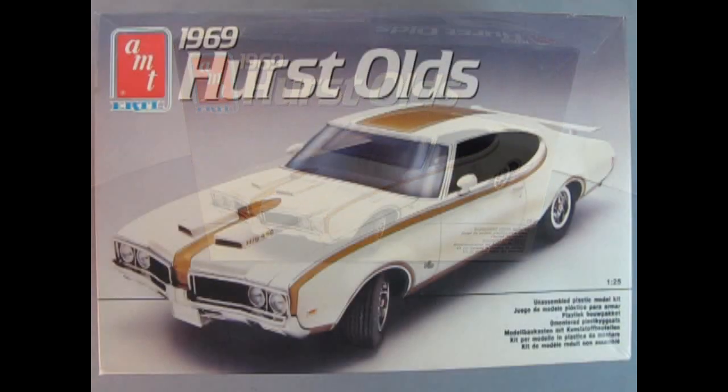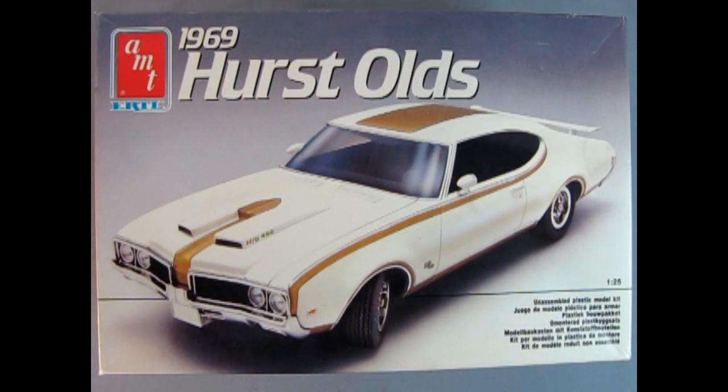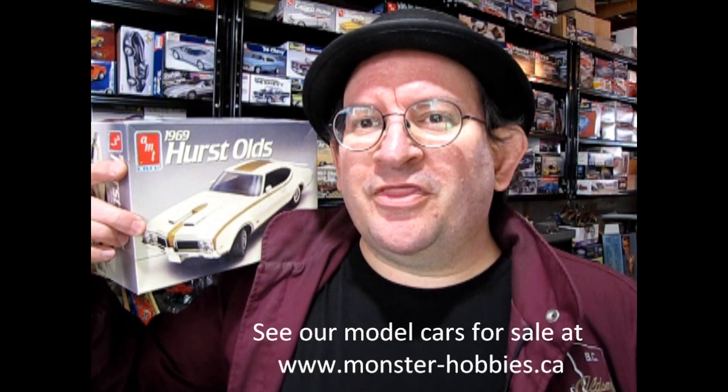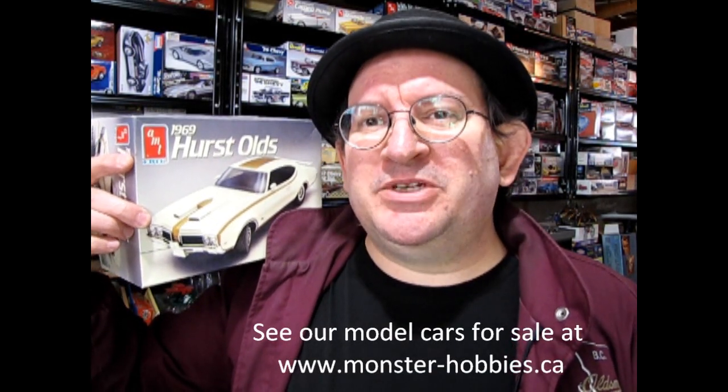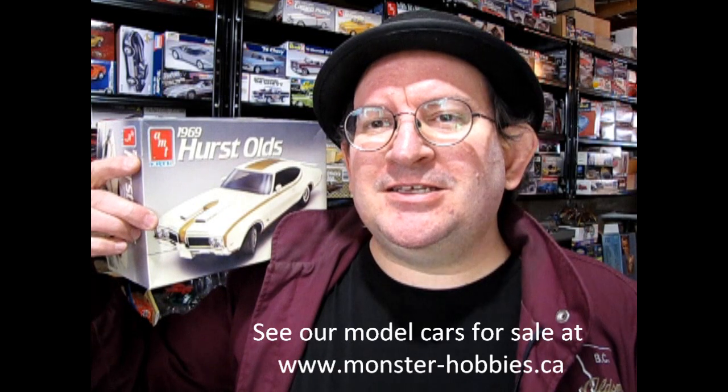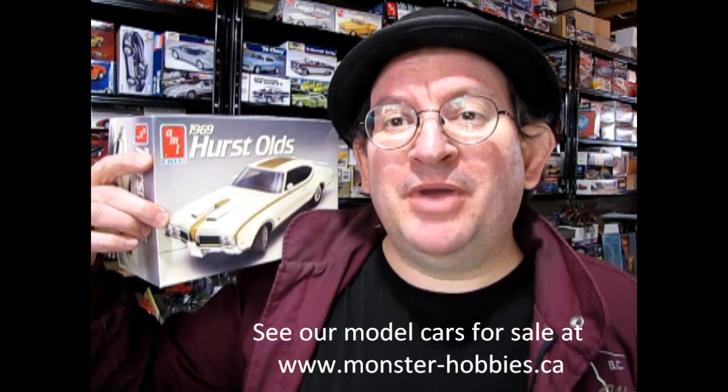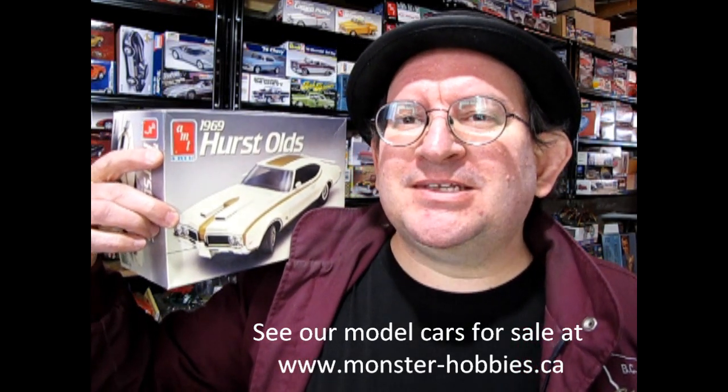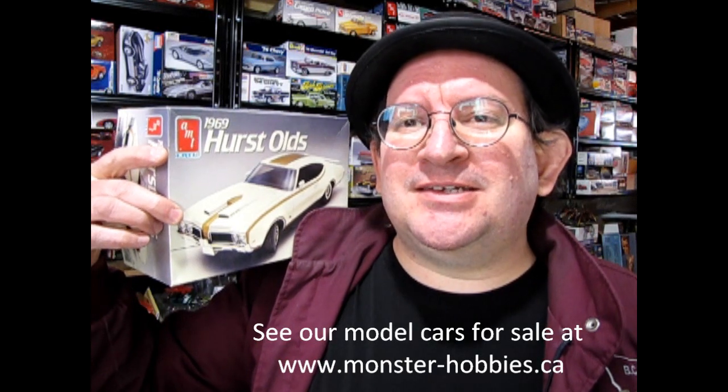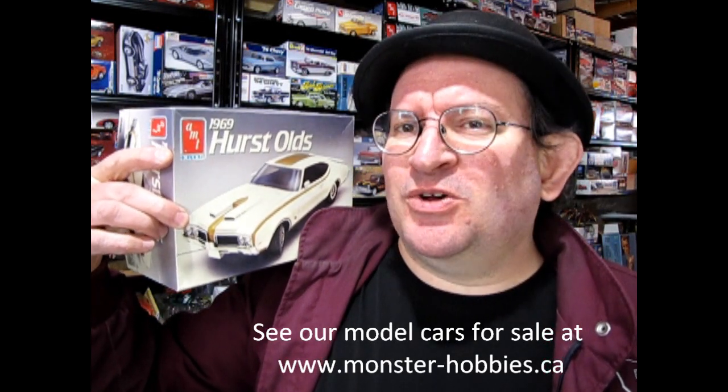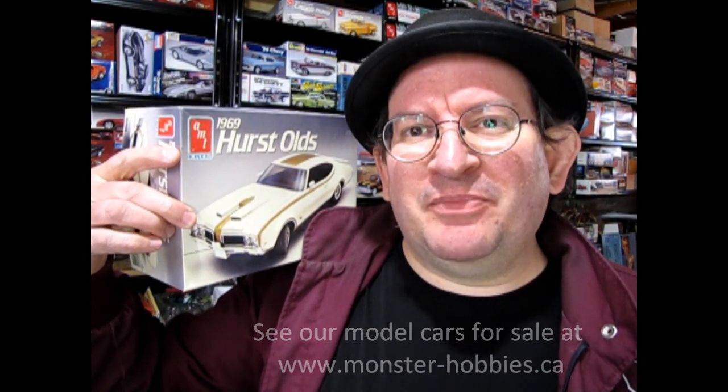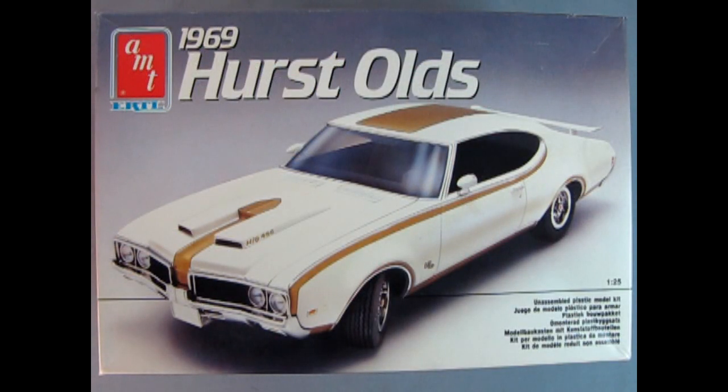Today we will be looking at the 1969 Hurst Oldsmobile by AMT Ertl. I thought I would put on my Oldsmobile Club jacket from the 1990s from the British Columbia Oldsmobile Club to show you what's inside. So without further ado, let's go down to the bench and see what's in the box. The AMT Ertl 1969 Hurst Olds is a 1:25th scale unassembled plastic model kit.